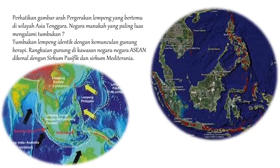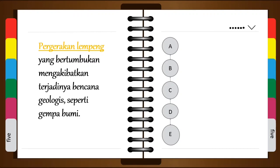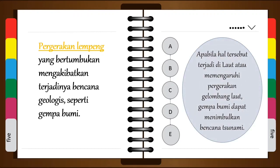Perhatikan gambar arah pergerakan lempeng yang bertemu di wilayah Asia Tenggara. Negara manakah yang paling luas mengalami tumbukan? Tumbukan lempeng identik dengan kemunculan gunung berapi. Rangkaian gunung di kawasan negara-negara ASEAN dikenal dengan sirkum Pasifik dan sirkum Mediterania. Pergerakan lempeng yang bergumul menyebabkan terjadinya bencana geologis seperti gempa bumi. Apabila hal tersebut terjadi di laut atau mempengaruhi pergerakan gelombang laut, gempa bumi dapat menimbulkan bencana tsunami.